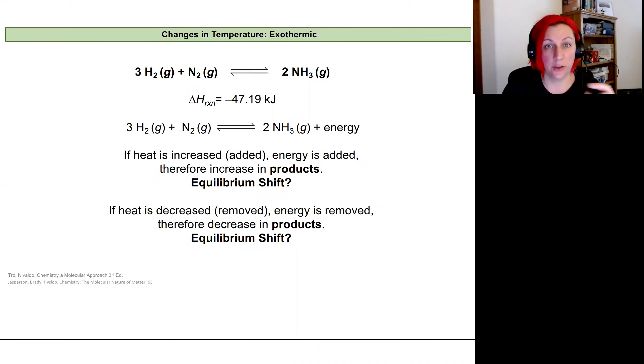So let's look at exothermic first. Here's an example reaction. It's one of the ones we've been using combining hydrogen and nitrogen to form ammonia. Now this reaction has a negative enthalpy and that makes it exothermic.